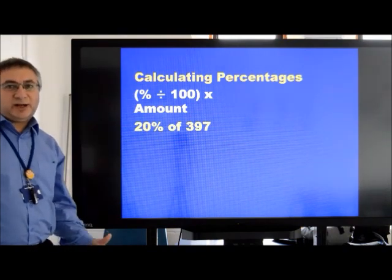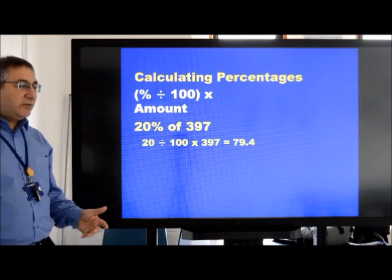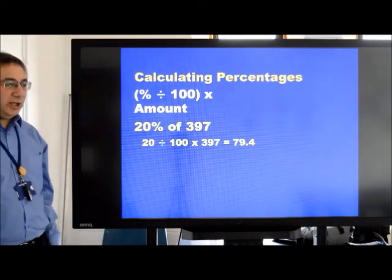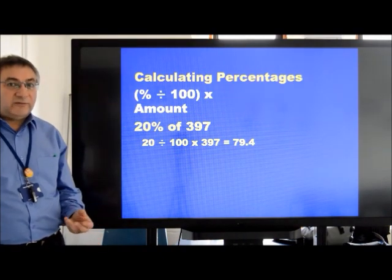If we were asked in a question to perhaps find twenty percent of three hundred and ninety-seven, then we would write it out like this. Twenty divided by one hundred and then multiplied by three hundred and ninety-seven would give us the answer of seventy-nine point four.